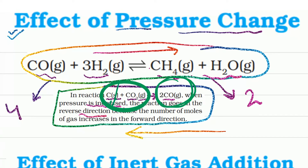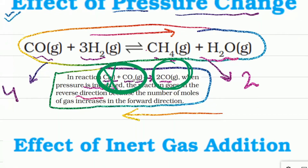An important point: solid carbon is not counted here. If pressure increases, the reaction proceeds in the reverse direction toward reactants. If pressure decreases, the reaction shifts toward the product side. The key is to count only the gaseous number of reactants and gaseous number of products.